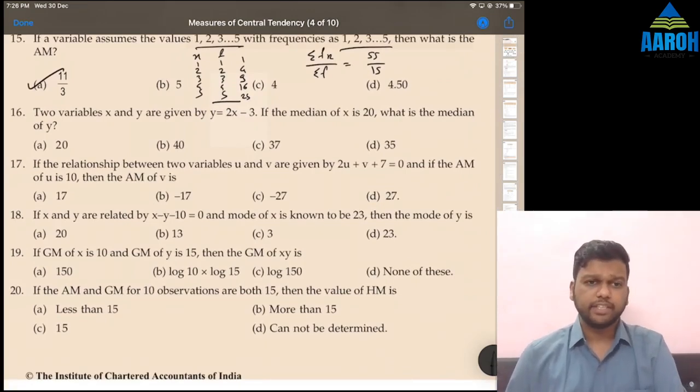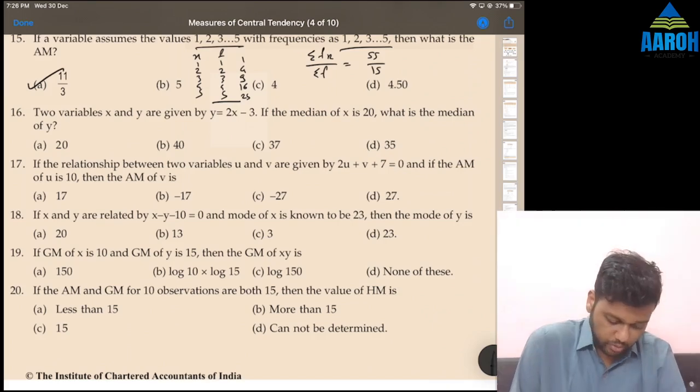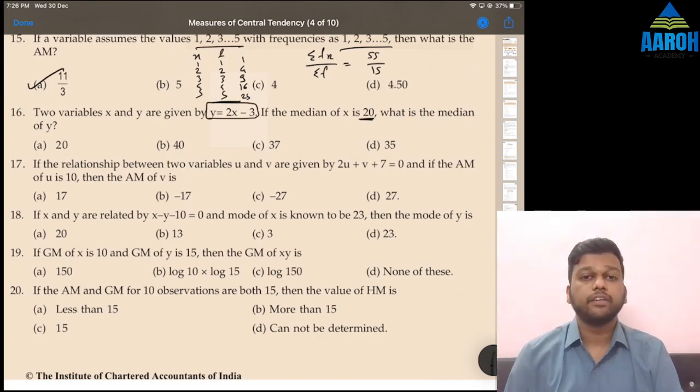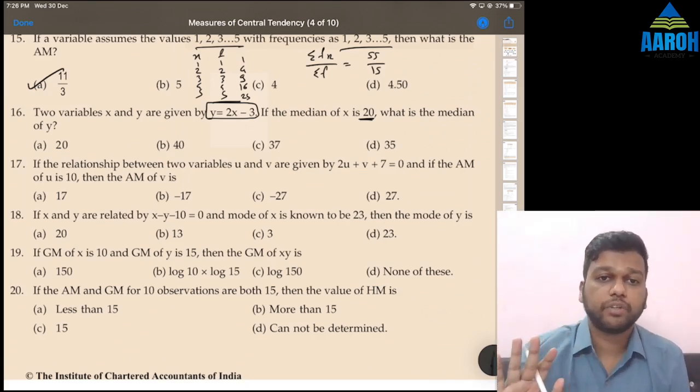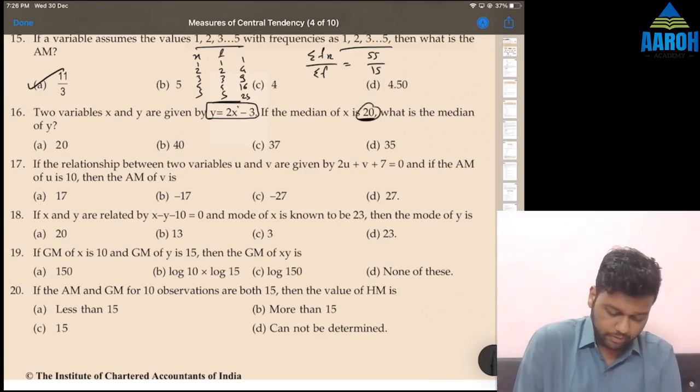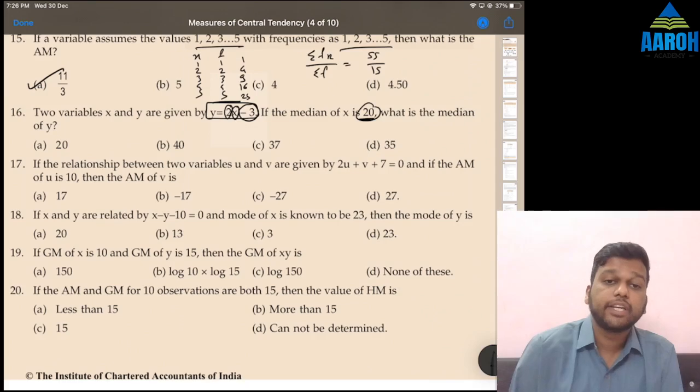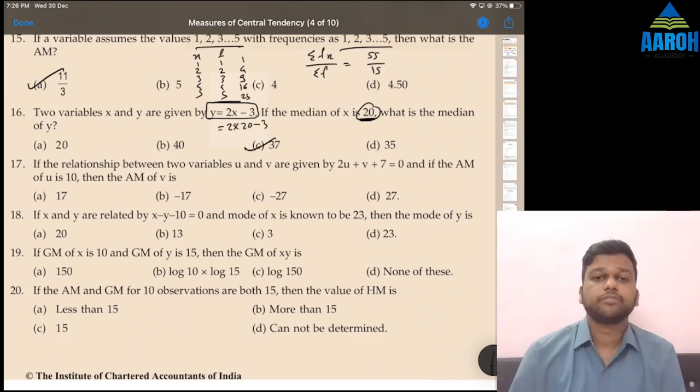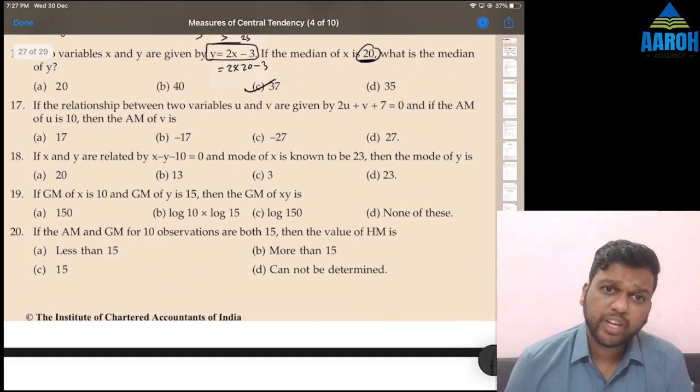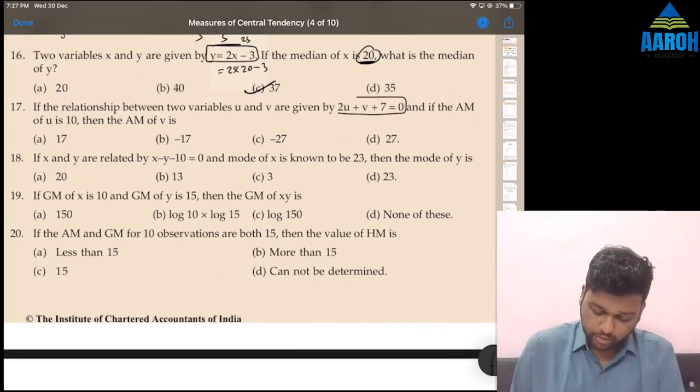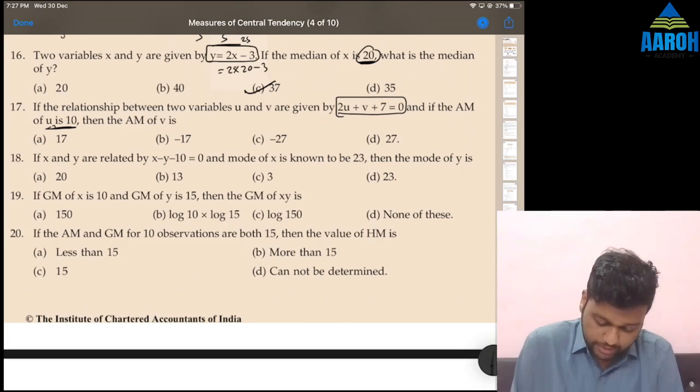Next is based on change of origin scale. Two variables X and Y are given by Y equals 2X minus 3. If median of X is 20, what is median of Y? For mean, median and mode, they are affected by both change of scale and change of origin. You just have to put median in place of X. This minus 3 is our change of origin, 2 is our change of scale. So let's put X as 20. 2 into 20 minus 3, that is 37. Next, if the relationship between U and V is 2U plus V plus 7 equals 0, and AM of U is 10, then AM of V is: put U as 10, so 2 into 10 plus V plus 7 equals 0, that means 27 plus V equals 0. So V will be minus 27, option C.